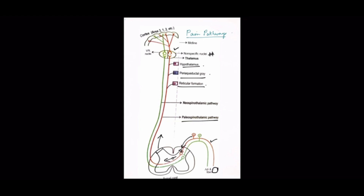Neospinothalamic Pathway. The neospinothalamic tract is mostly developed in primates. This pathway carries the fast pain. The fibers are mostly A-delta fibers. First order neurons terminate mainly in lamina 1 and 5 of the dorsal horn of the spinal cord.